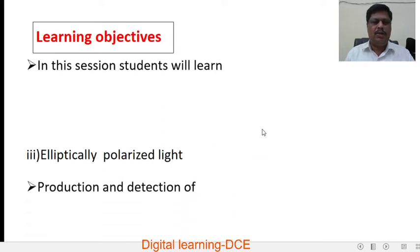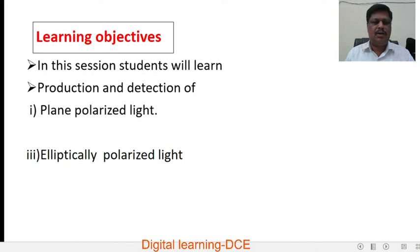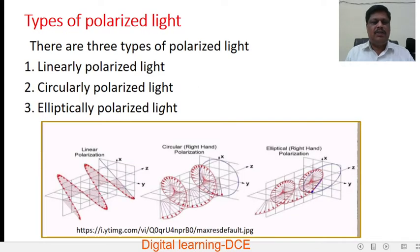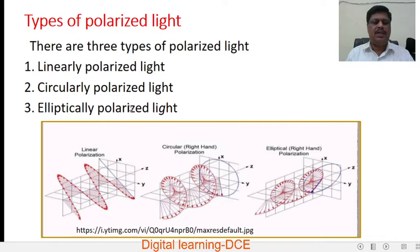The learning objectives of this video are the production and detection of plane polarized light, circularly polarized light, and elliptically polarized light. There are three types of polarized light: linearly polarized light, circularly polarized light, and elliptically polarized light.